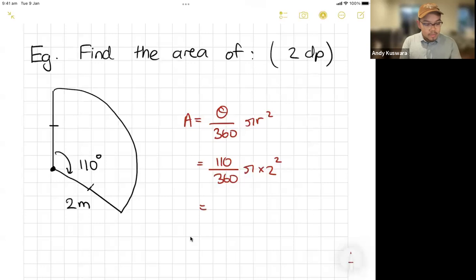Can I square that? And at this point, put it into your calculator, 110 on 360 times pi, which is like shift at the bottom shift. And then times 10x, times two squared.